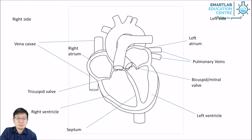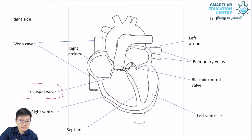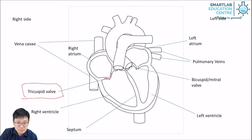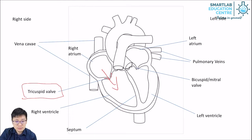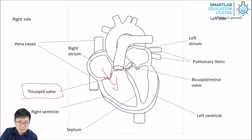Separating the two atria on the top from the two ventricles on the bottom are valves. We're going to talk about the tricuspid valve on the right side. The tricuspid valve consists of two flaps of tissue — they function like a one-way door. When the right atrium pumps blood into the right ventricle, as long as the blood pressure in the right atrium is higher than in the right ventricle, blood will flow from top to bottom. If the right ventricle contracts, the pressure in the right ventricle will increase and blood will not be able to go back because the valve will close.